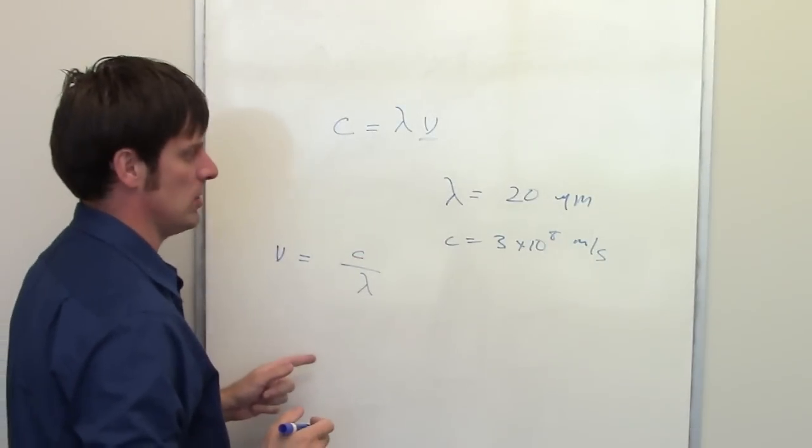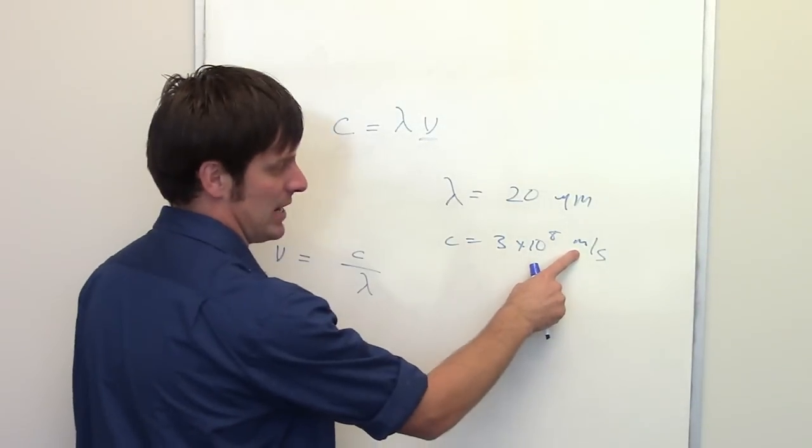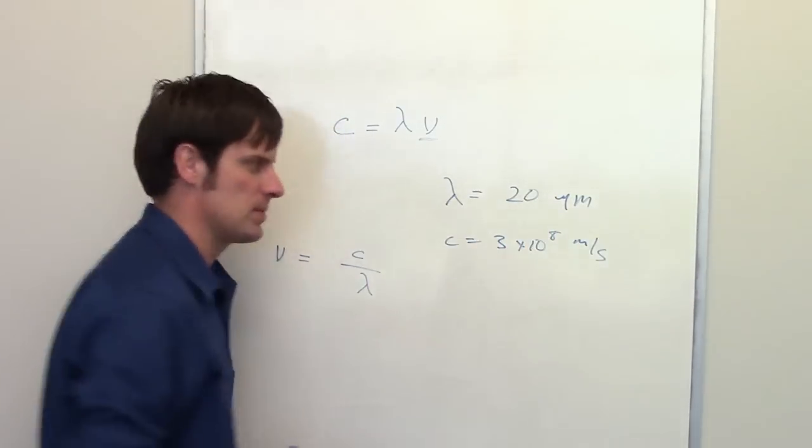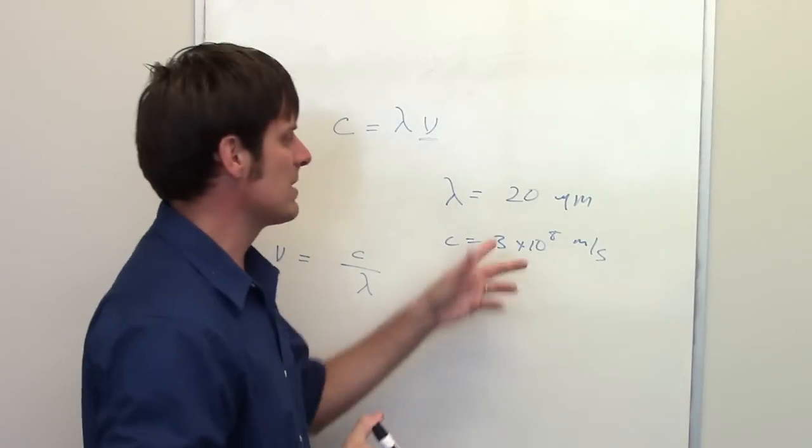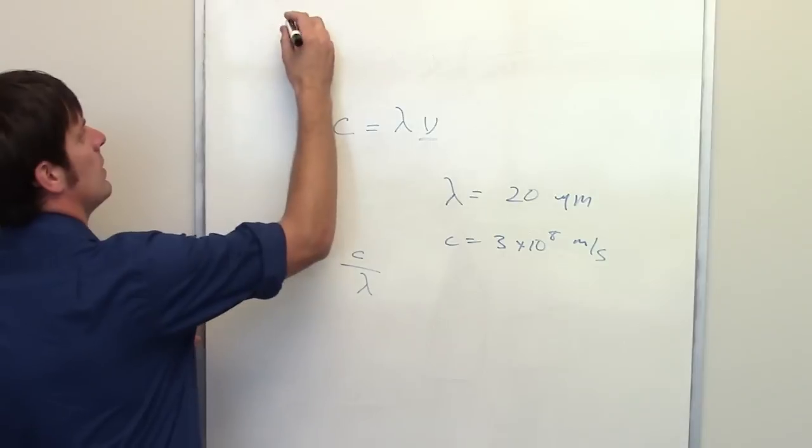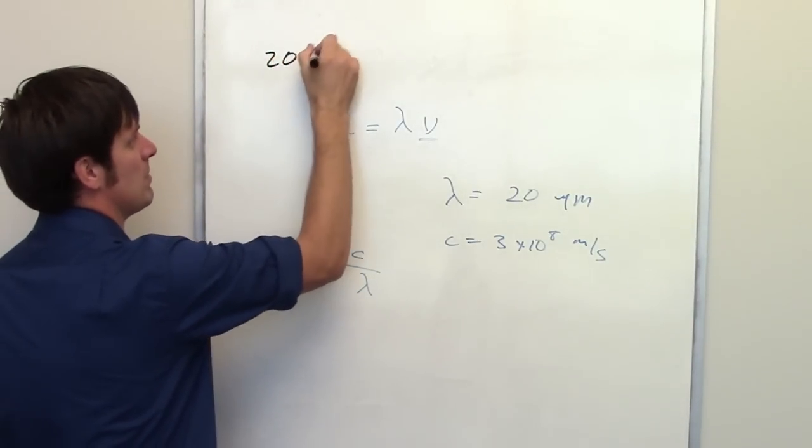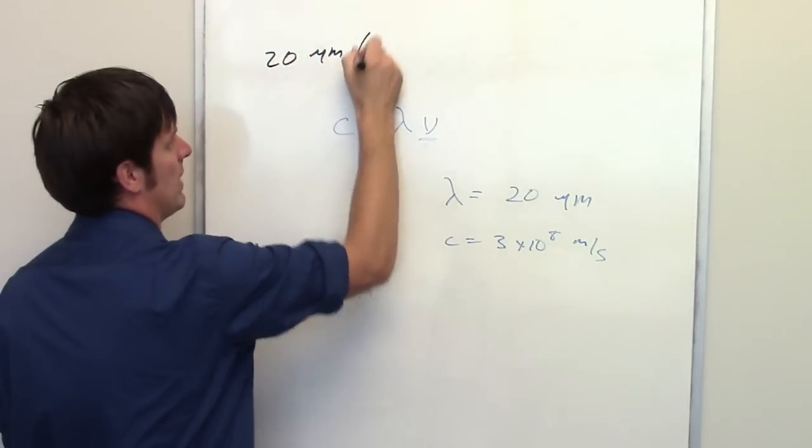The units on these have to match, though. The speed of light units that we have are meters per second. Our wavelength units are in micrometers. I'd like to do this by converting the micrometers into meters. We do that using dimensional analysis. We can write down that 20 micrometers is our wavelength.